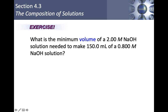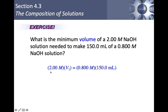Dilution problem: what is the minimum volume of a 2 M NaOH solution needed to make 150 mL of 0.8 M NaOH? Using M₁V₁ = M₂V₂: 2 × V₁ = 0.8 × 150 mL. A trick: if both sides use milliliters, your answer will be in milliliters. Solving gives V₁ = 60 mL.